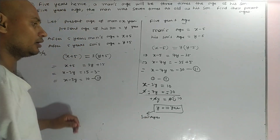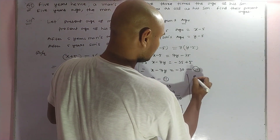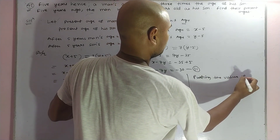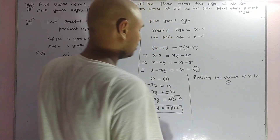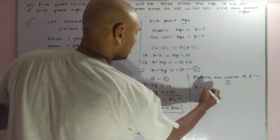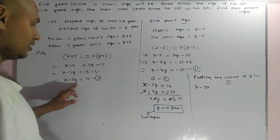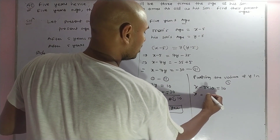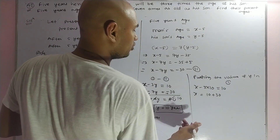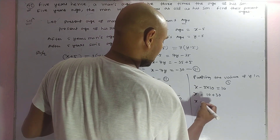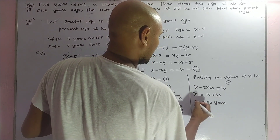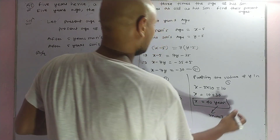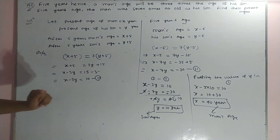Now putting the value of y into Equation one: x minus three into ten equals ten, so x minus thirty equals ten, giving x equals forty years. This is the man's present age. I think it is clear. You are able to follow me. Thank you very much.